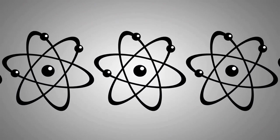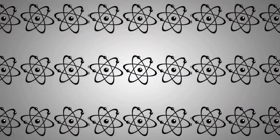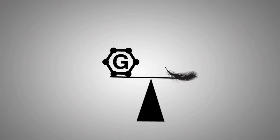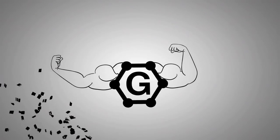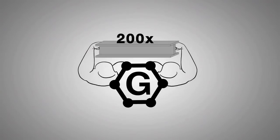Graphene is the thinnest known material, only one atom thick. It would take three million sheets of it to equal the width of a pencil tip. Despite being the lightest known material, it's also the strongest, harder than diamond, and 200 times stronger than steel.